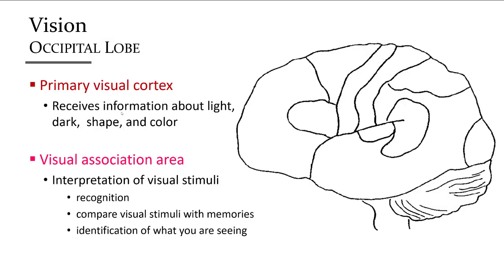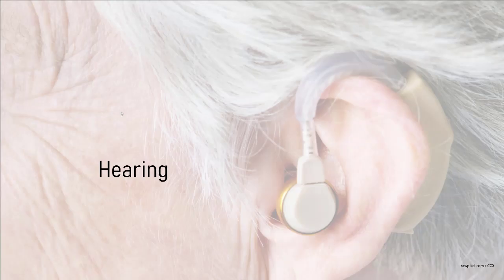Using the worksheet diagram, you can label the visual regions of the brain. Within the occipital lobe, at the most posterior point of the cerebrum, the primary visual cortex receives basic visual information. The visual association area uses memory and experience to interpret what you are seeing.